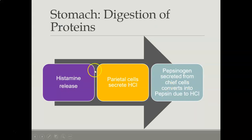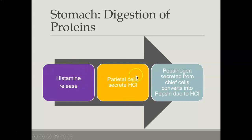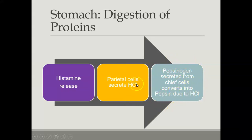The general overall cascade is: we have histamine release, then the parietal cells secrete hydrochloric acid, then pepsinogen is secreted from the chief cells and converted into pepsin due to the hydrochloric acid — they need the hydrochloric acid to do that.